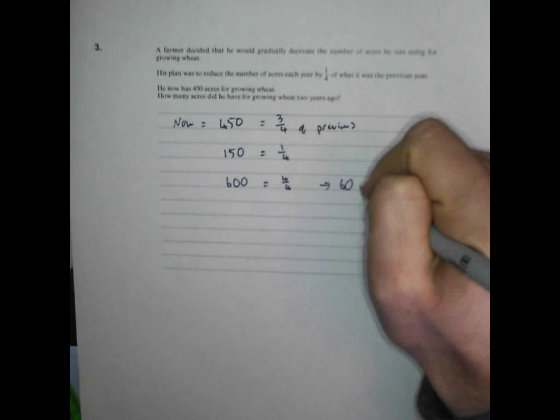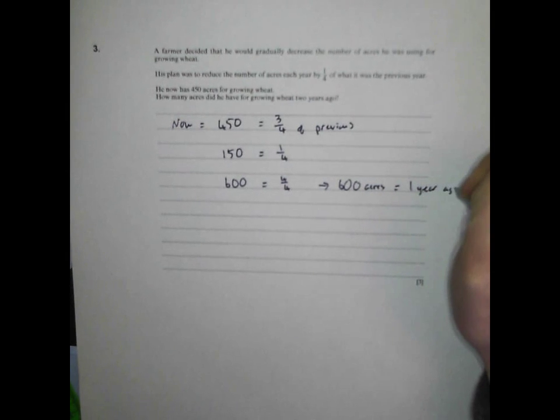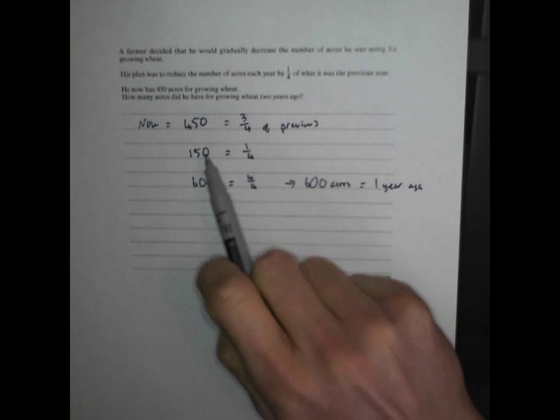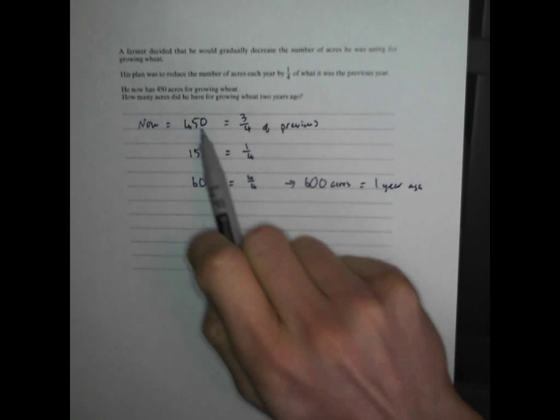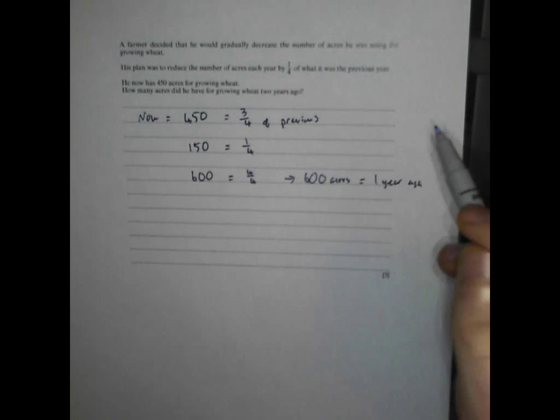So 600 acres must be one year ago. And the beauty of that is you can check that, because if you've got 600 and you take a quarter off, a quarter of 600 is 150. And if you take that off, you're down to 450. So that's looking good. So a year ago, he had 600.